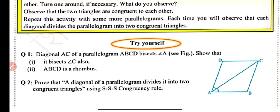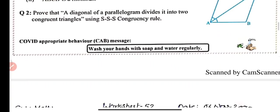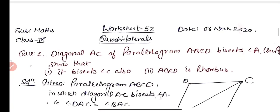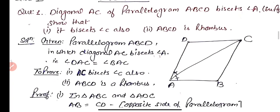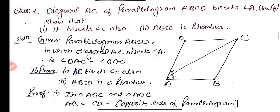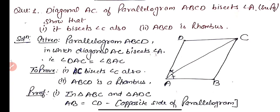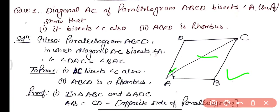Now we have two questions for practice. Question 1: Diagonal AC of parallelogram ABCD bisects angle A. Show that it bisects angle C also, and that ABCD is a rhombus. We are given that angle DAC equals angle BAC, and we need to prove that angle DCA equals angle BCA.